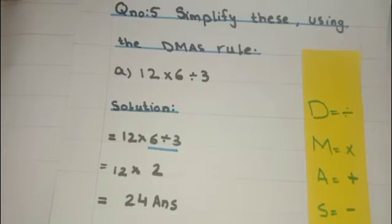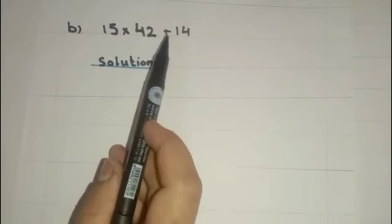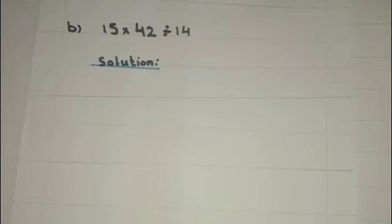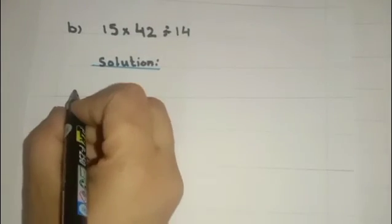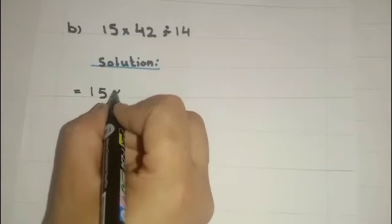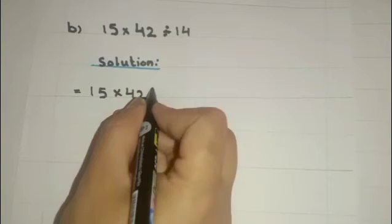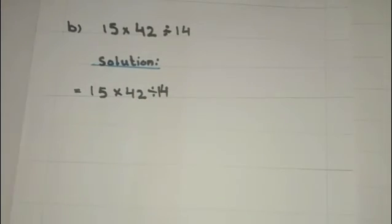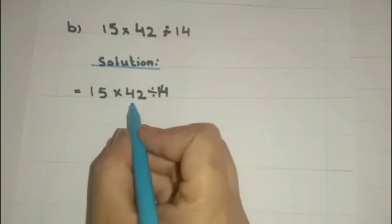Let's see another part, this is part B: 15 multiply by 42 divided by 14. Here also we have two operations, multiply and divide. First of all we will start our solution: 15 multiply by 42 divided by 14. Now according to DMAS we have to divide first.